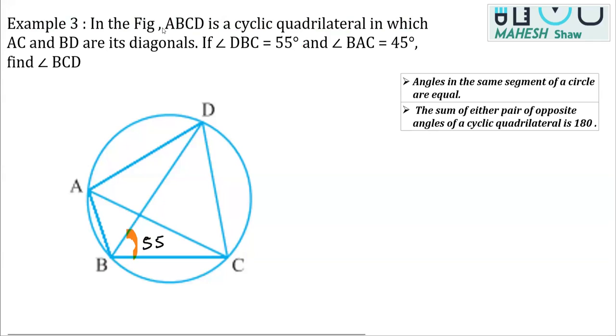And one more angle that is BAC. This is BAC. This angle is also mentioned and this is given as 45 degrees. We know the value of these two angles. We have to find the value of BCD. That means you have to get this angle, right? You have to find the measure of this angle.